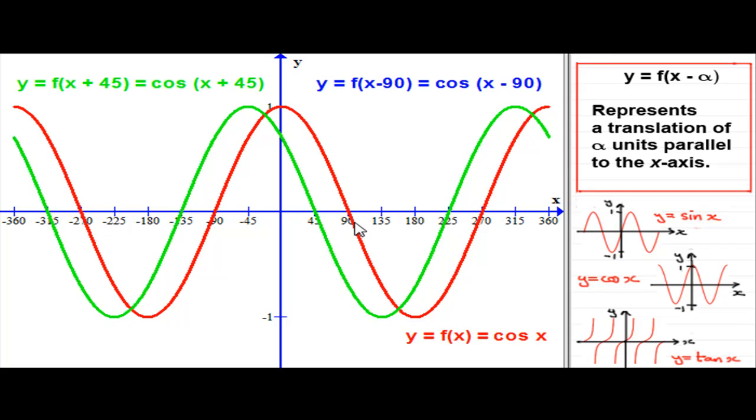The red graph of cos x has now been shifted 45 degrees to the left. All our points on the x-axis shift 45 degrees to the left. So do the peaks. So do the troughs. Okay. So we have a translation there. And what about the other graph? Let's see what you've got for that.